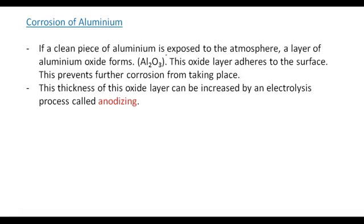If a clean piece of aluminium is exposed to the atmosphere, a layer of aluminium oxide forms — that is Al2O3. This oxide layer adheres to the surface and prevents further corrosion from taking place. In the case of iron, when the oxide is formed it doesn't stick to the surface — it flakes off and exposes more iron. When aluminium is exposed to air it forms an oxide layer which sticks to the surface, and the thickness of this oxide layer can be increased by an electrolysis process called anodizing.